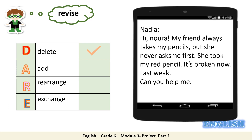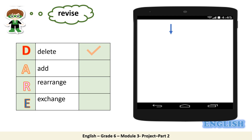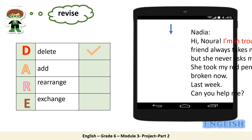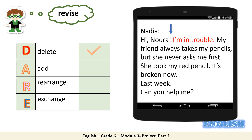Now let's see if we can add any more information. You can add a sentence, an expression, or a phrase — such as 'I'm in trouble' — to tell your friend that you're having a problem.